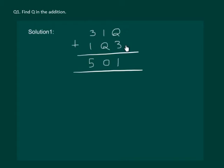In the ones place, we have Q plus 3 and we have to get 1 in the answer. This can only happen if Q is equal to 8.